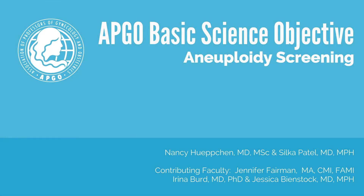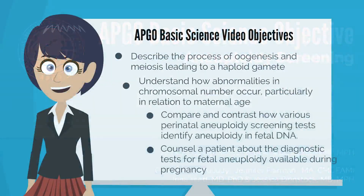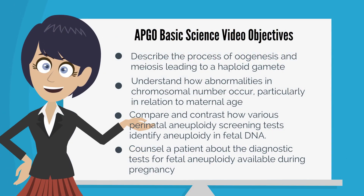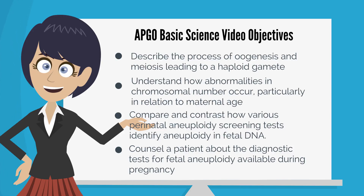Welcome to the APCO Basic Science Objective video about abnormal genetic or aneuploid screening. The objectives for this video are: describe the process of oogenesis and meiosis leading to a haploid gamete; recognize how abnormalities in chromosome number occur, particularly in relation to maternal age; compare and contrast how various perinatal aneuploidy screening tests identify aneuploidy in fetal DNA, including first and second trimester screening tests and circulating cell-free DNA; and counsel a patient on the diagnostic tests for fetal aneuploidy available during pregnancy.